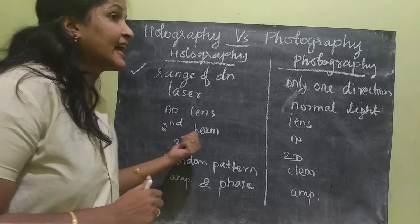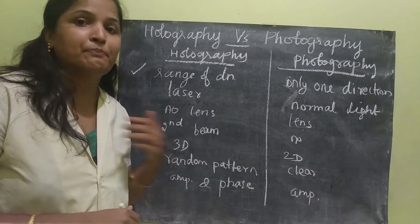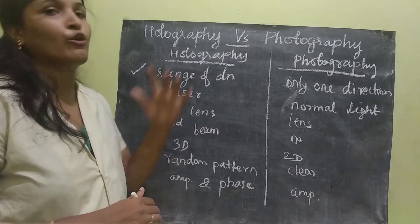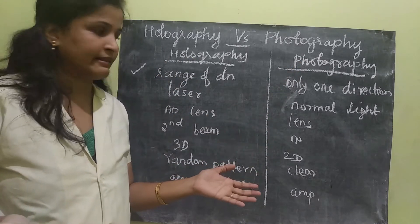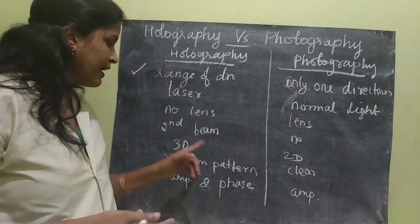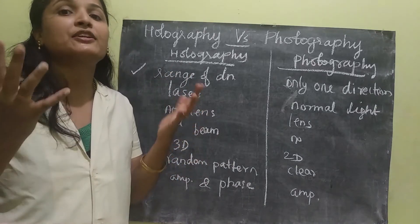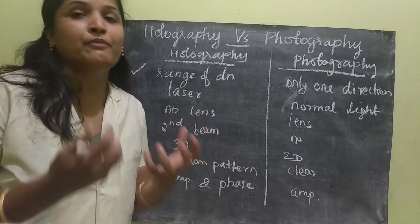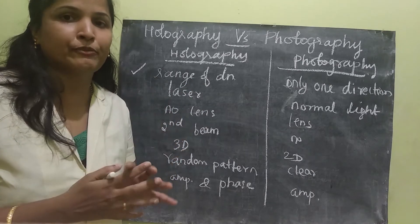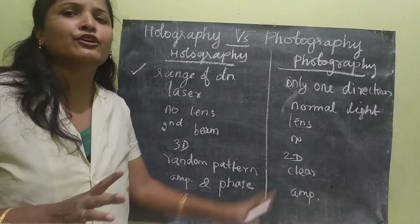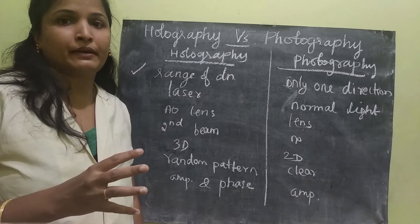Next difference: a second beam, otherwise called a reference beam, is required for holography, but in photography we don't use anything like that. And in holography, three-dimensional information can be obtained, but in photography only two-dimensional information is obtained.